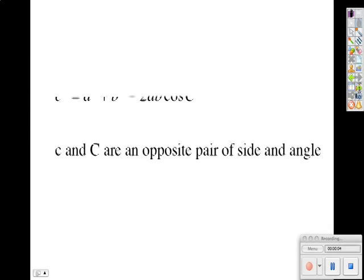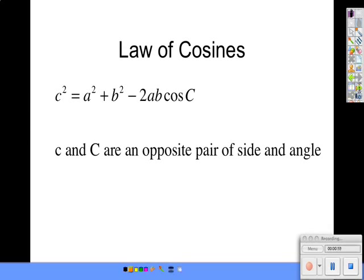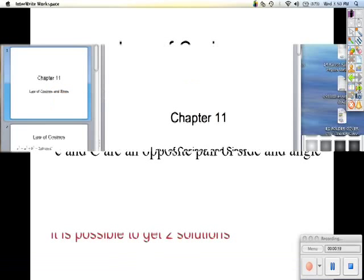Chapter 11 deals with non-right triangle trigonometry, and we're going to start with the law of cosines. The thing to know here and to notice is this: whatever side goes over here, its opposite angle is what we're taking the cosine of.